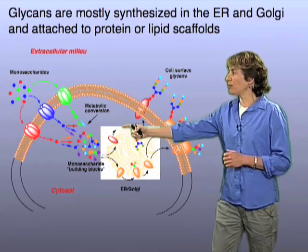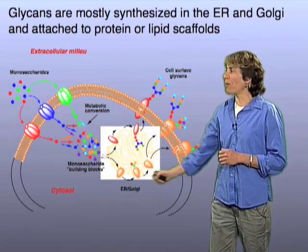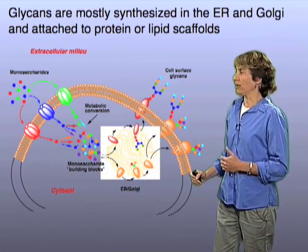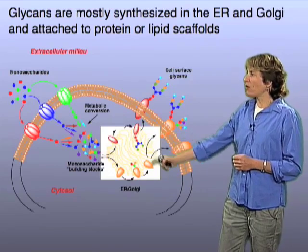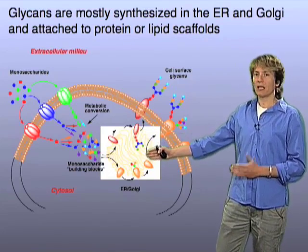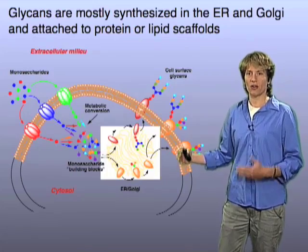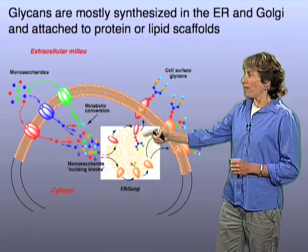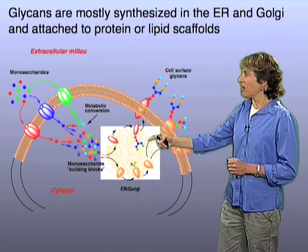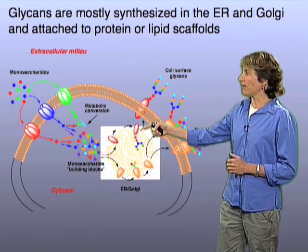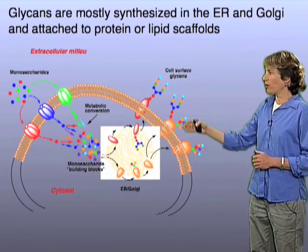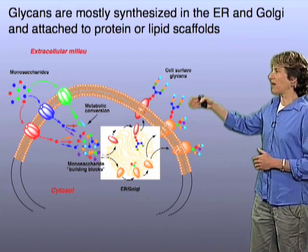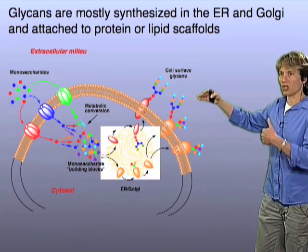Eventually, those building blocks are sent into subcellular compartments that we call the endoplasmic reticulum, or the ER, and the Golgi compartment. These membrane-bound organelles are basically an assembly line for the construction of complex glycans from simple monosaccharide building blocks. The glycans are built inside the ER and the Golgi, attached to either proteins or lipids. And then eventually, those glycoproteins and glycolipids are delivered to the plasma membrane, where the cells are now coated with these sugar molecules.